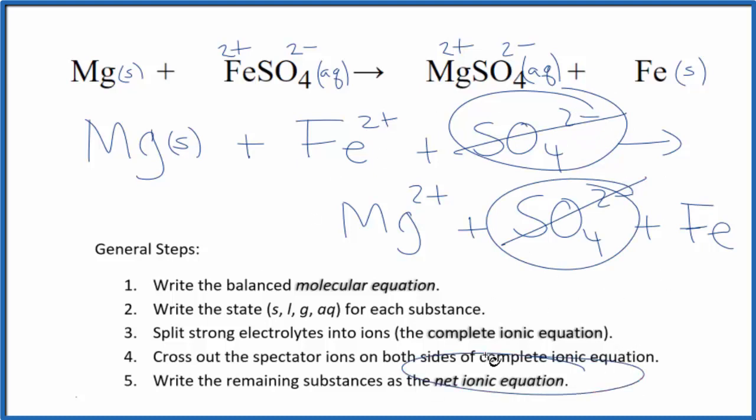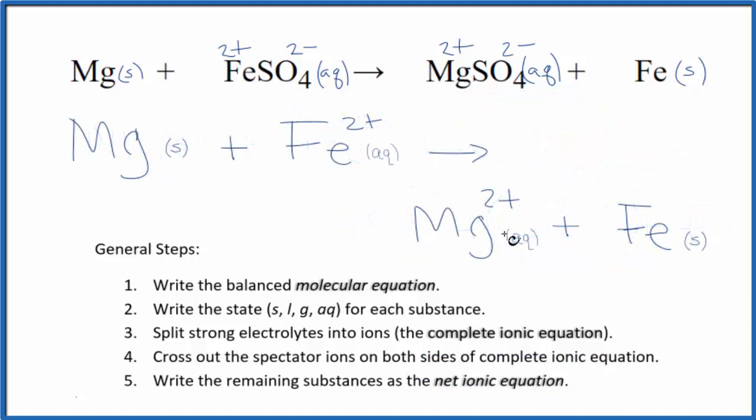What's left? That's our net ionic equation for Mg plus FeSO4. I'll clean this up and write the states. We'll have our net ionic equation. So this is the balanced net ionic equation for magnesium metal plus iron 2 sulfate.